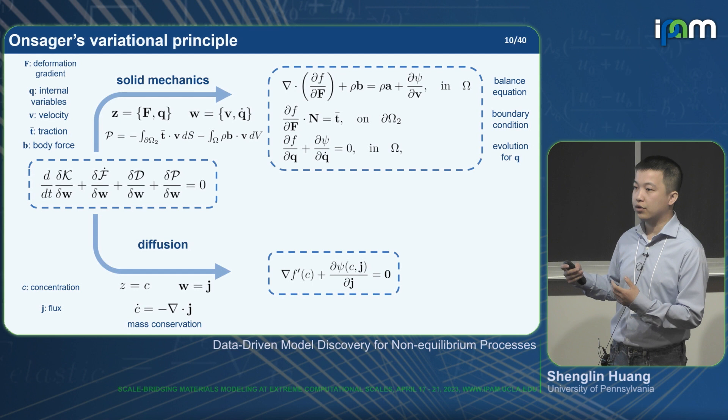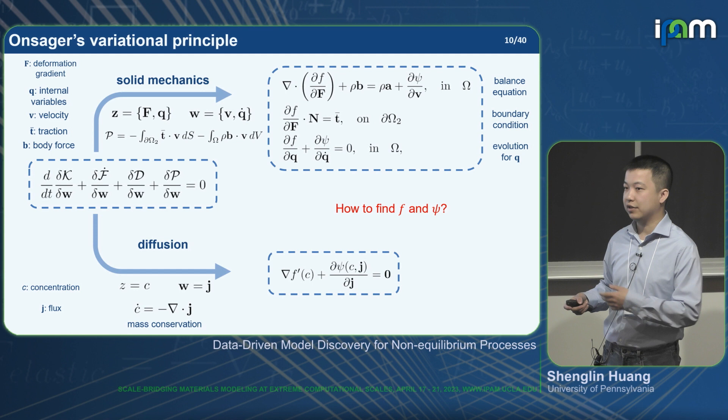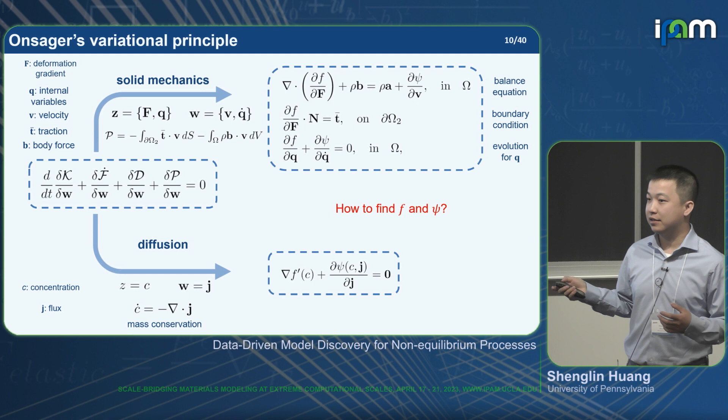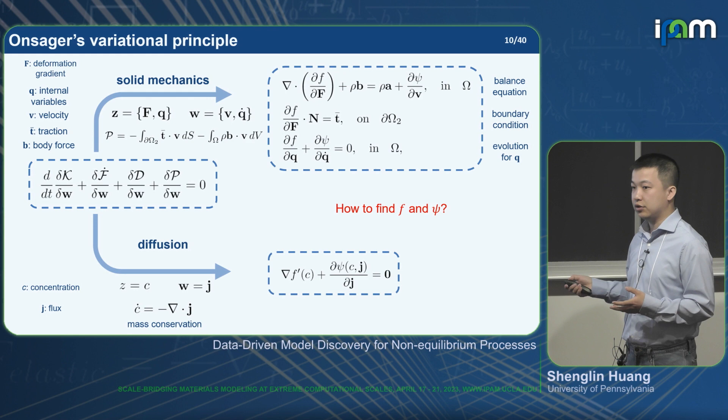Here I want to ask an inverse question. If we have an unknown system, we do some experiments, start from molecular dynamics or even DFT, and we have the evolution data, but we don't know how to characterize this material at the continuum level — can we identify what the free energy and dissipation potential are from the evolution data?